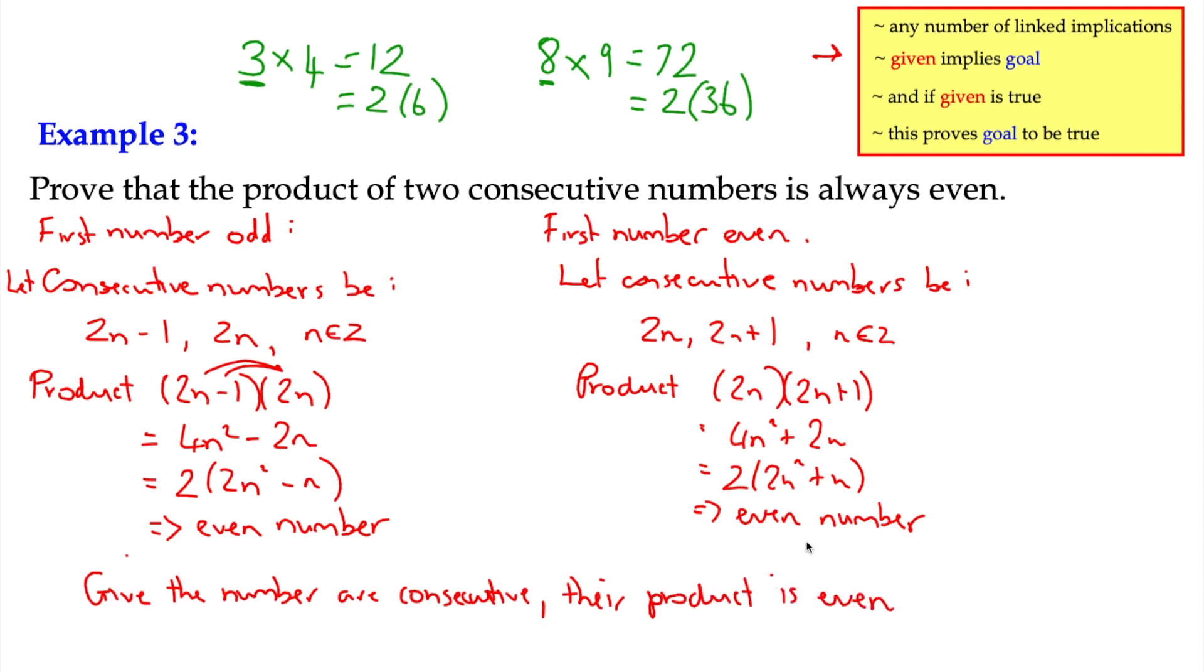Because, of course, the product of all two numbers is not always even. In this case, it must be that the numbers are consecutive, and that's the given, that's the assumption at the beginning that they're consecutive. Therefore, we've shown that the product is even. We can say, therefore, the conjecture is true. That's always a nice thing to say because it's a proof. Therefore, the conjecture is true.